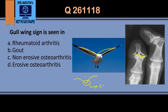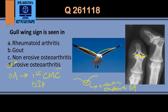So the answer is erosive osteoarthritis. Remember that osteoarthritis involves the first carpometacarpal joint — the carpometacarpal joint of the thumb — and the DIPs. The gull wing or seagull appearance is specifically seen in erosive osteoarthritis.